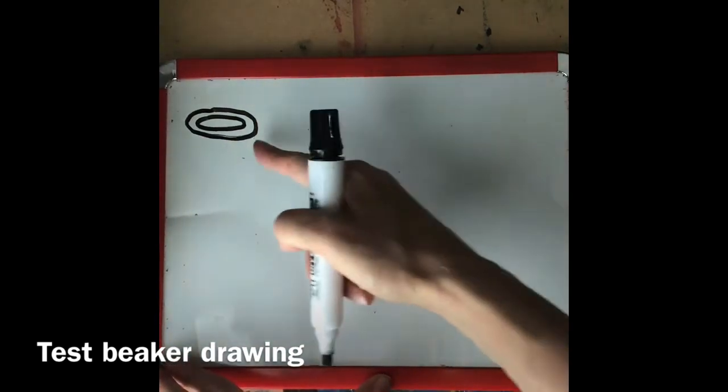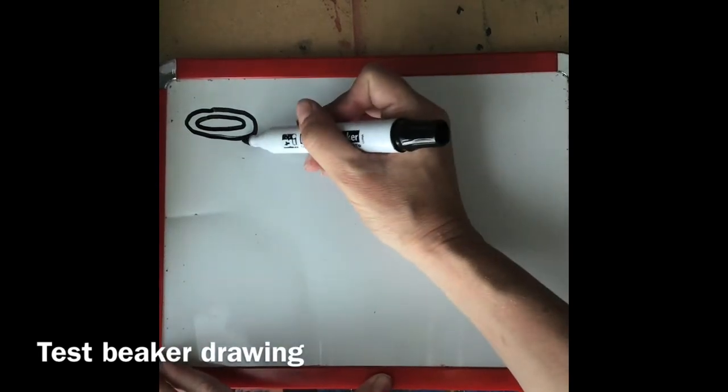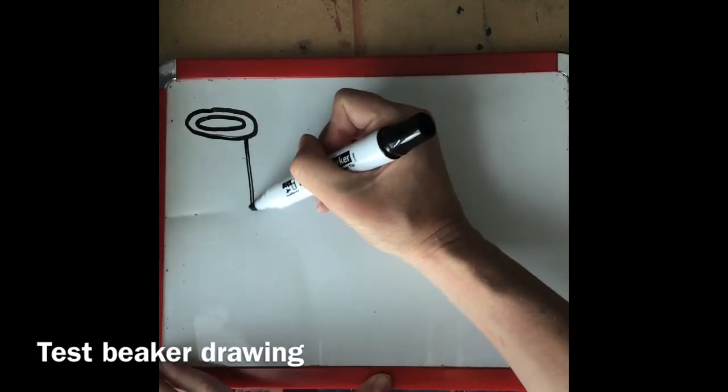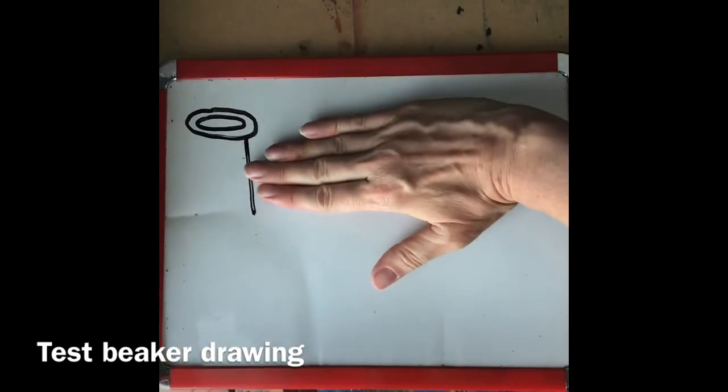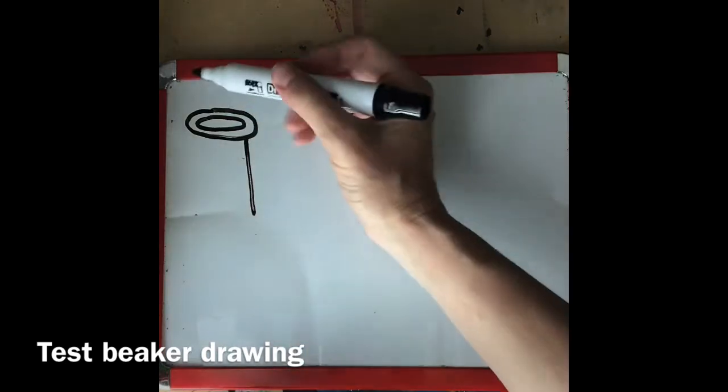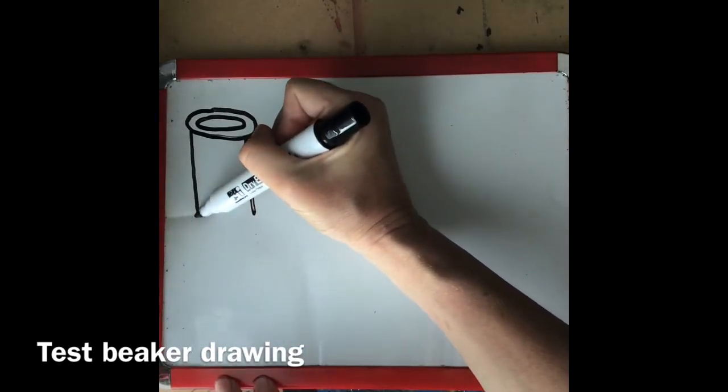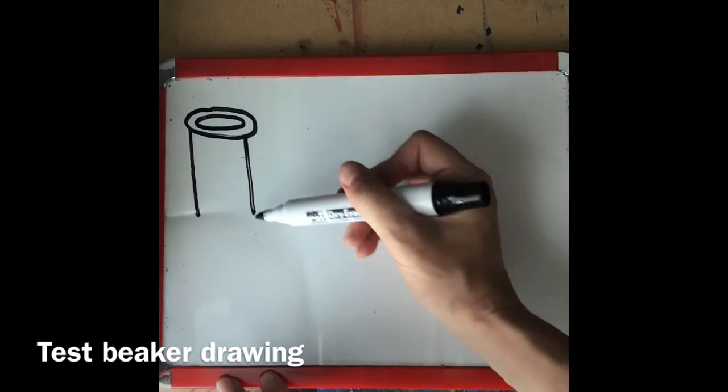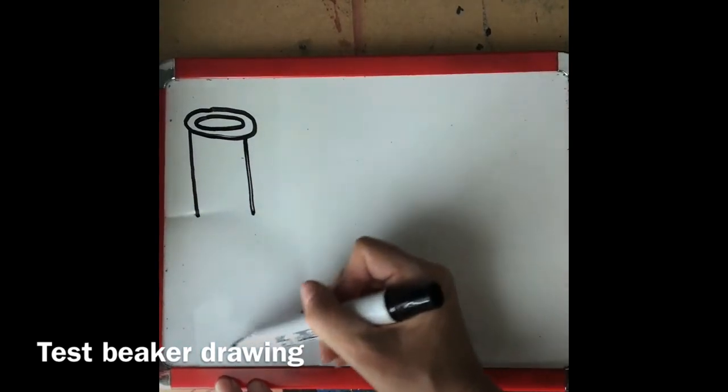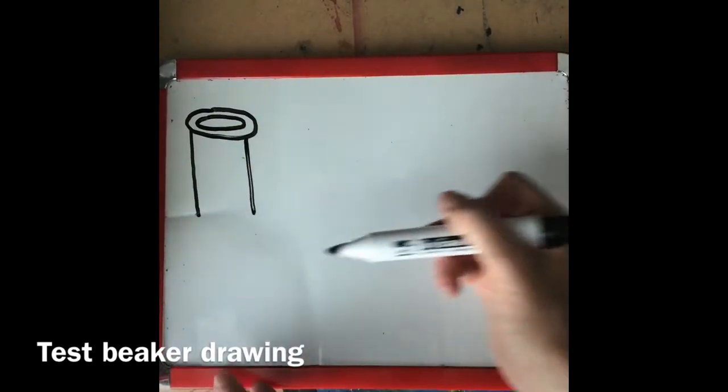Alright so this is the top of my test tube or my beaker and the sides I'm going to make a straight line about three finger widths to four finger widths down my page. Now the bottom I can get a little creative. So I can either take it straight down to make what looks like just a normal test tube, something you would put liquid in to pour into something else,